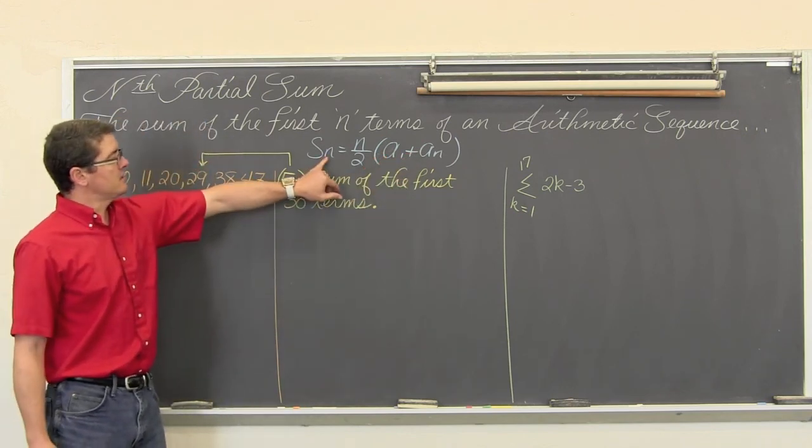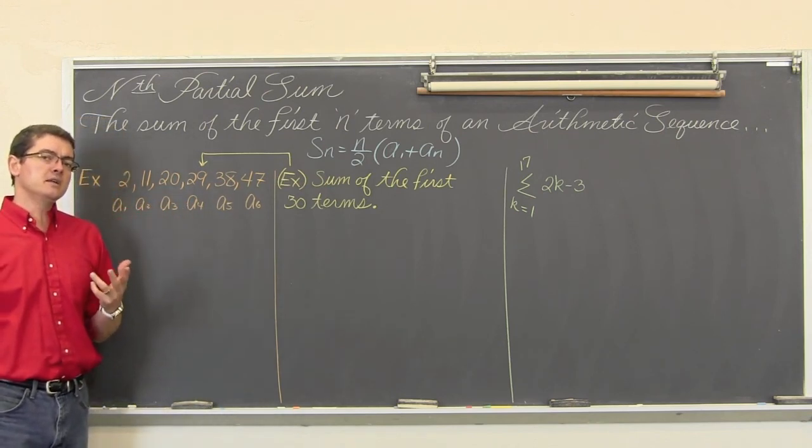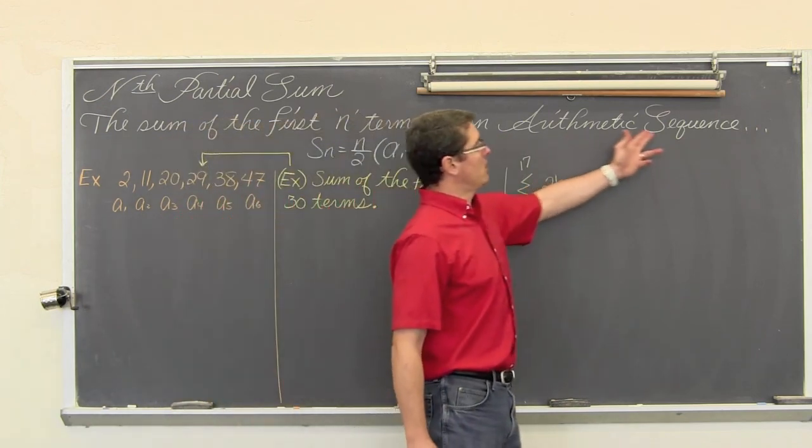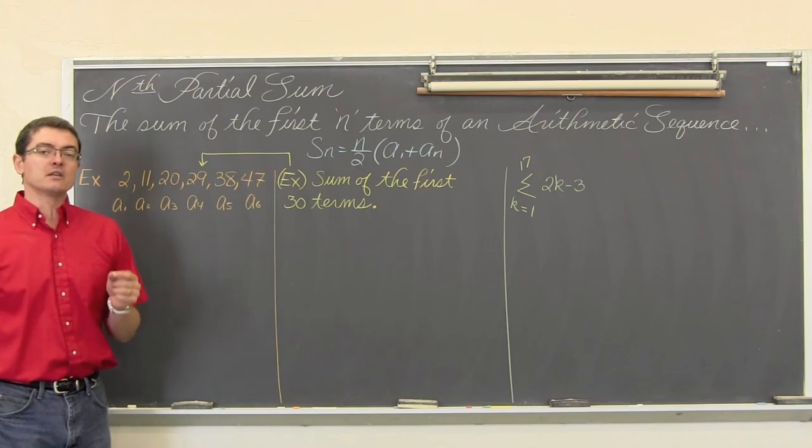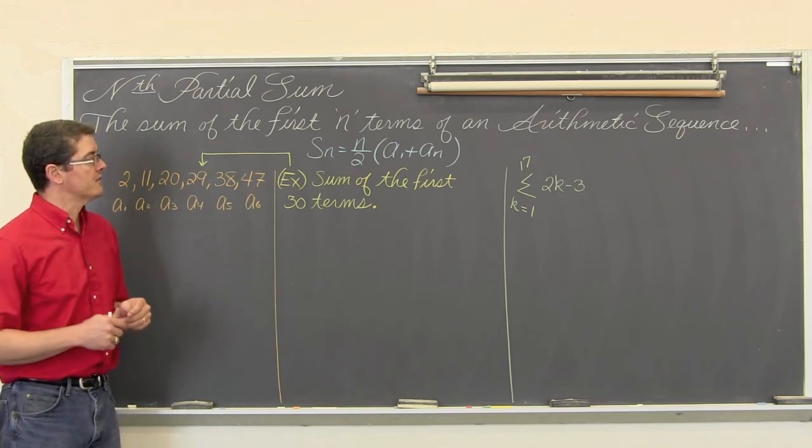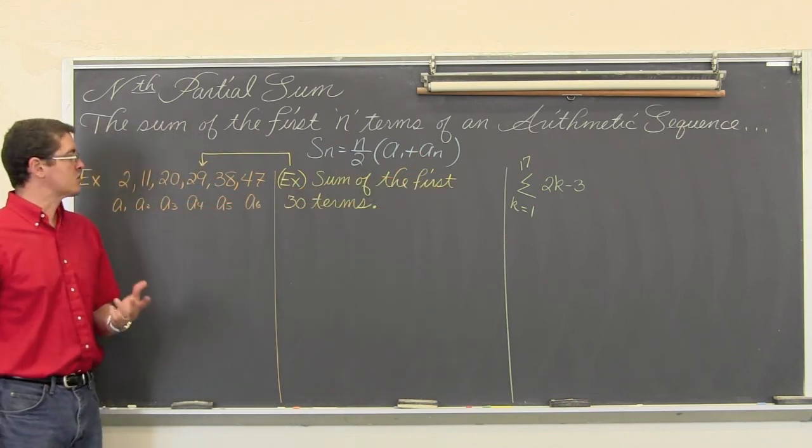Let's not forget that n is the number that you are plugging into this formula or that tracks where you are in an arithmetic sequence. So when n equals 4 you are looking at the fourth term of the sequence. If n equals 5 you are looking at the fifth. a sub n is that value that you get, that actual term.